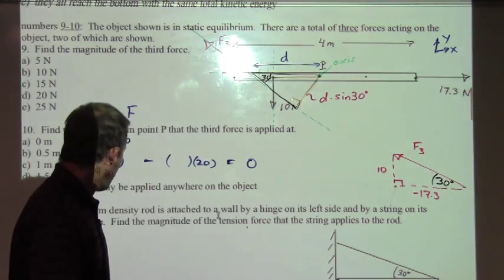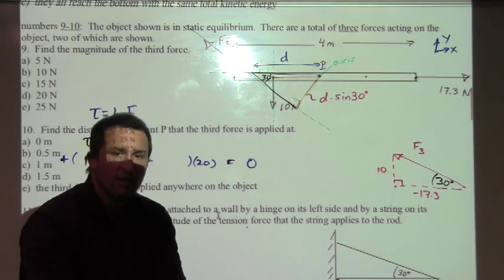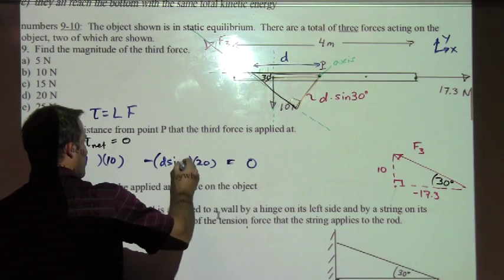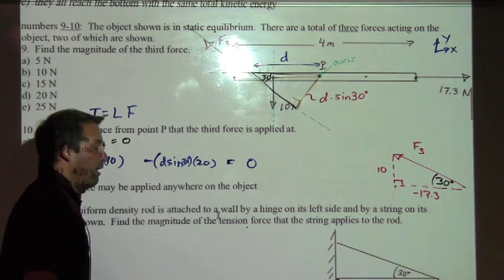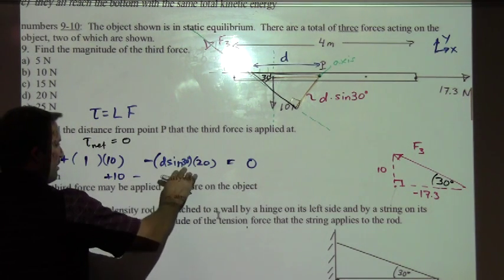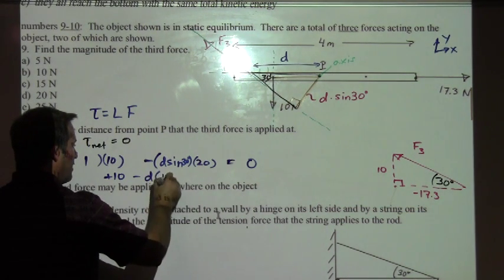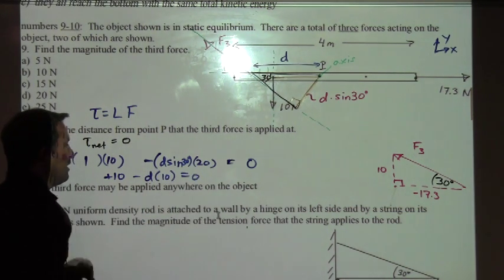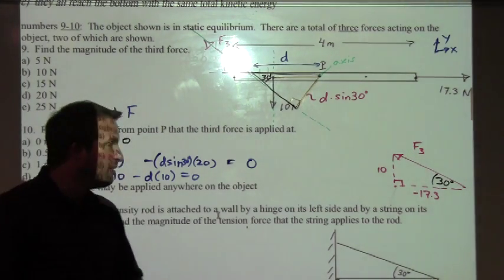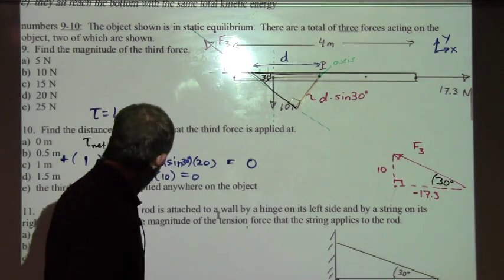Our lever arm distance is going to be d times the sine of 30 degrees. I can plug that in right here. The sine of 30 is one half. What I've got here is I've got plus 10 minus, the sine of 30 is one half, minus d times 10 equals zero. We can do the algebra here that d equals one meter. Answer C.